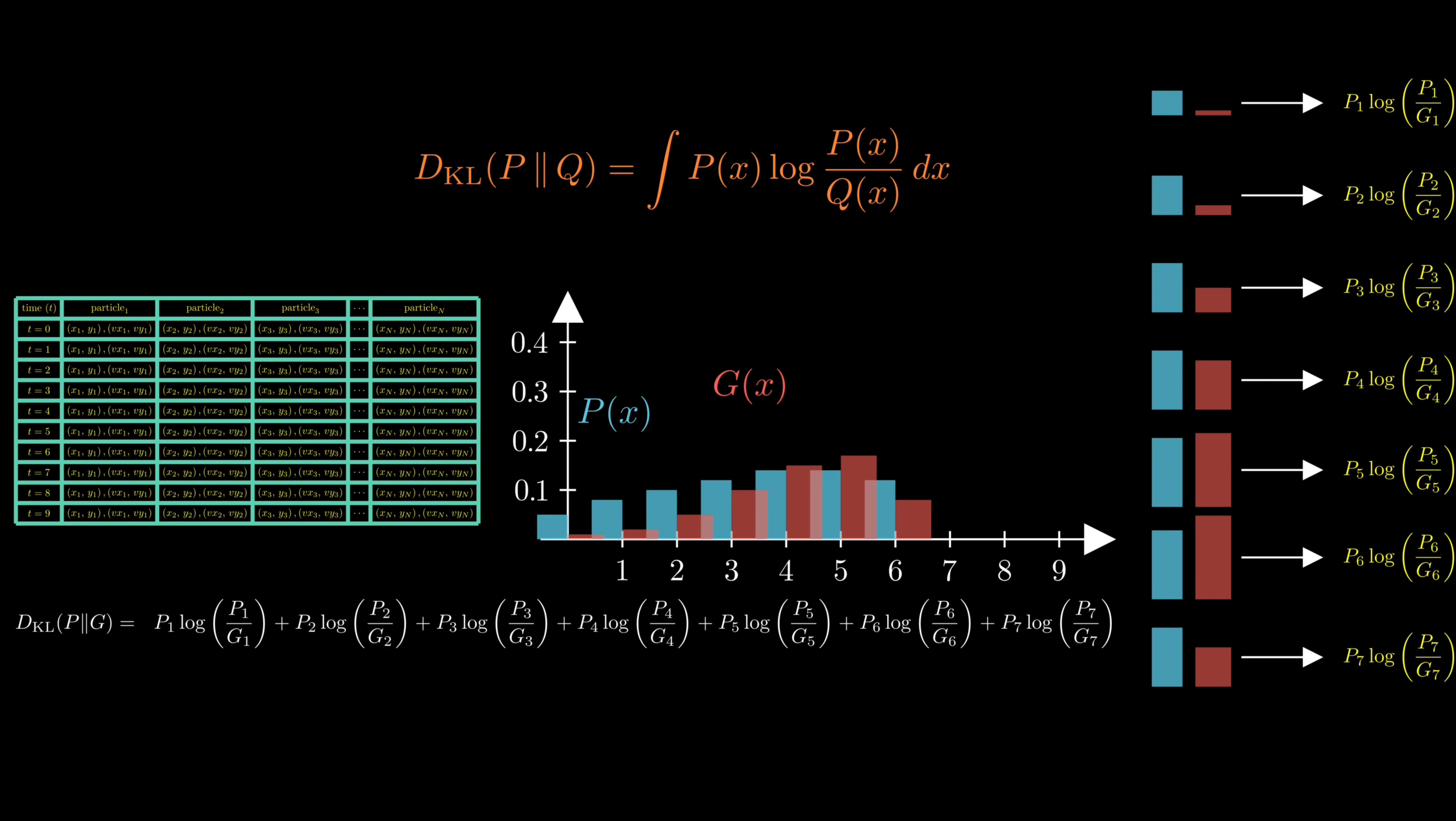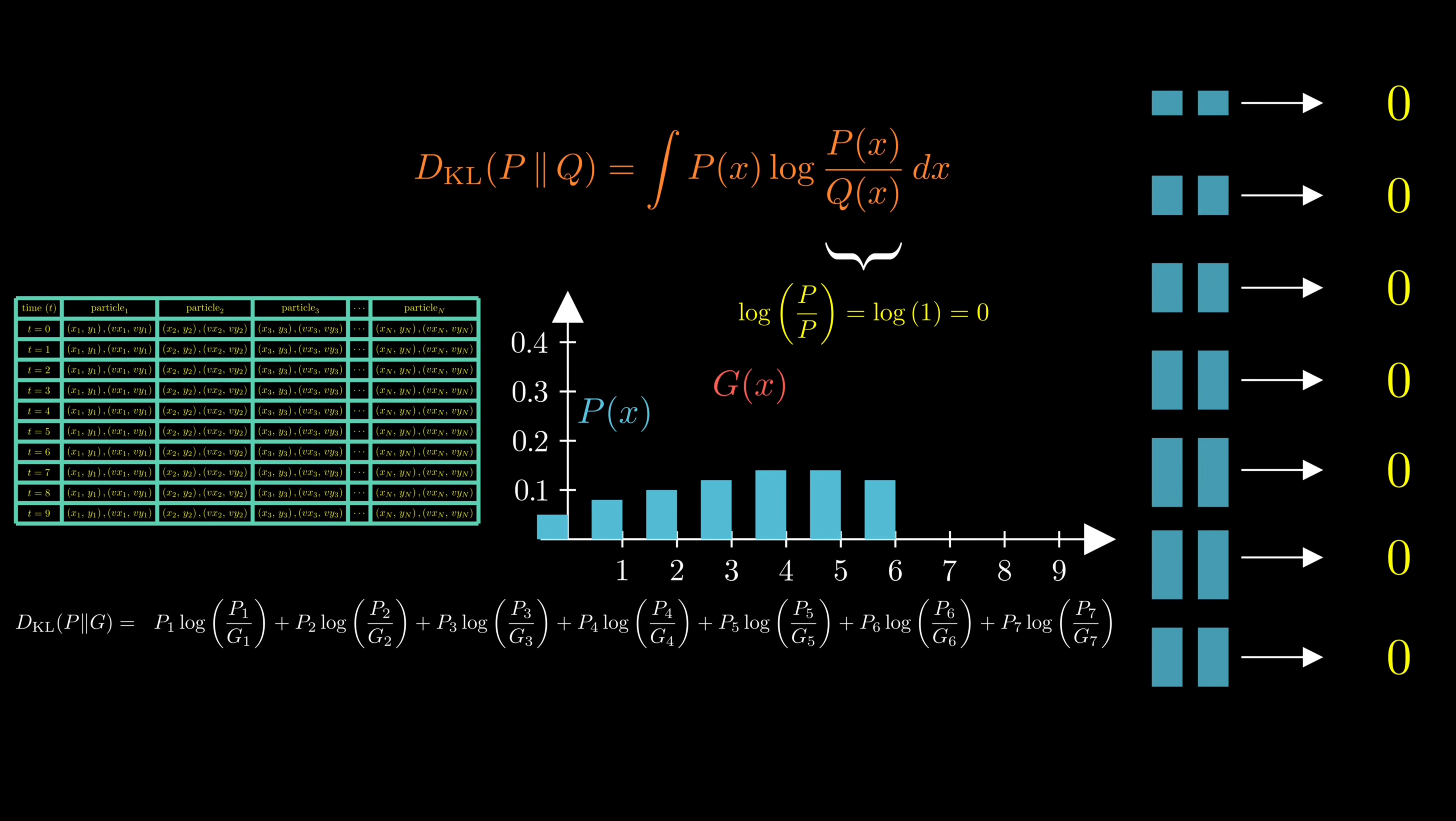As a sanity check, if our estimated distribution G perfectly matches the true distribution P, then the argument of the logarithm becomes logarithm of 1 which is 0, and the relative entropy turns to 0. That means no information is lost, and our estimate is perfect. However, in practice, we never know the true distribution P. So, how can we actually use relative entropy?